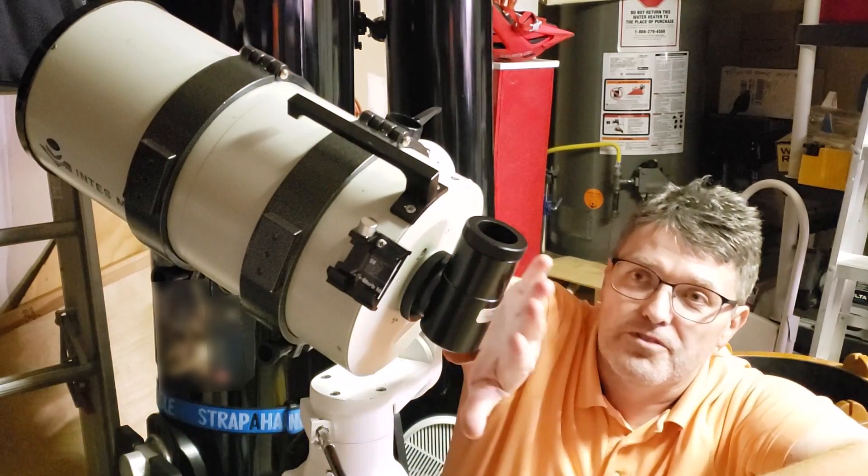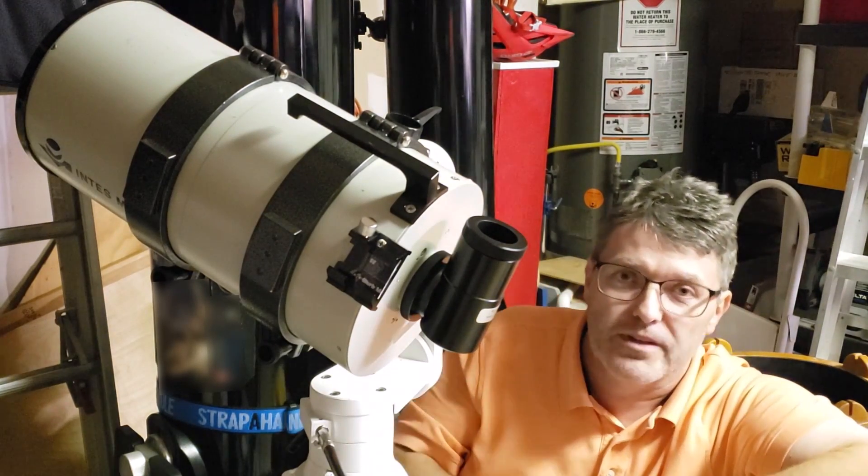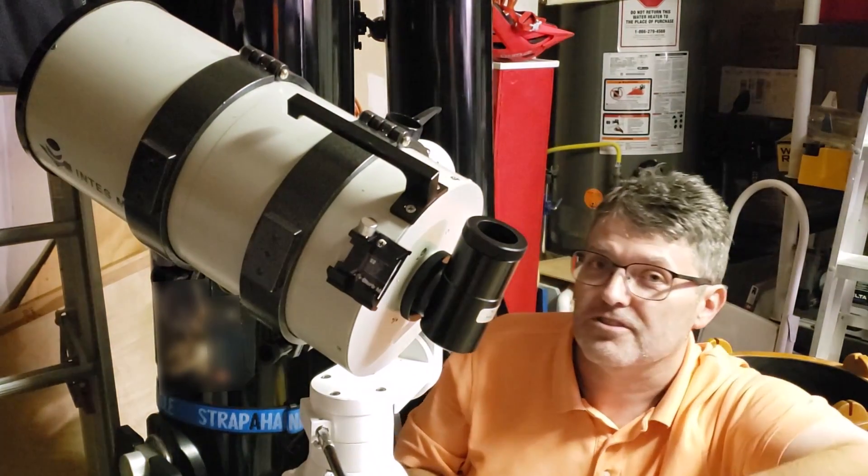So the first step is to remove the focuser tube from the telescope and then we'll remove the mirror from the focuser tube.